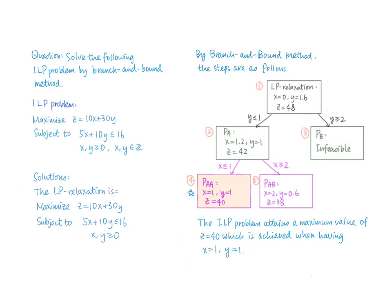To summarize, by the branch and bound method, the ILP problem has a maximum value of z = 40 for its objective function, achieved when x = 1 and y = 1. The following tree diagram gives us the process and solutions obtained at each stage. The orange numbers indicate the sequence of dealing with each subproblem in our deduction.